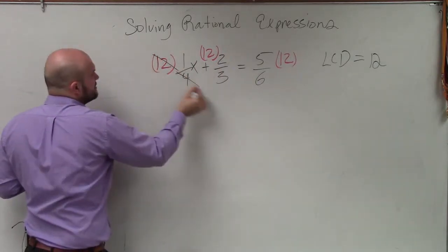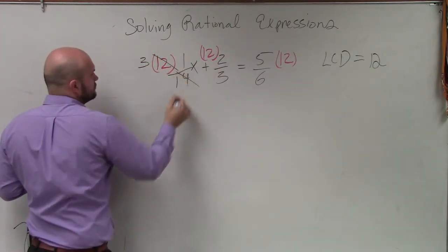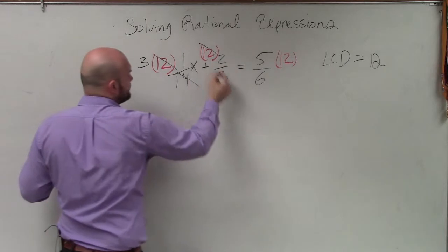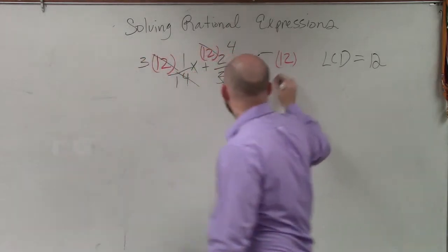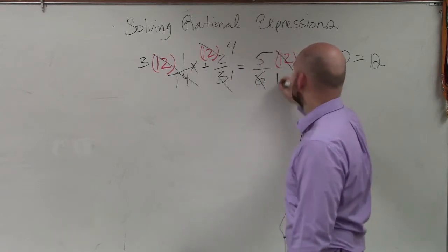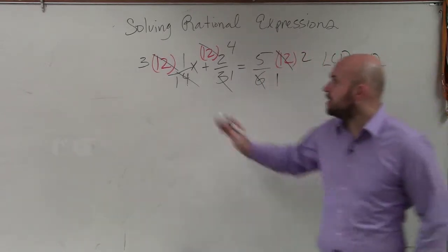So 12 over 4 simplifies to 3 over 1. 12 over 3 divides to 4 over 1. 12 over 6 divides to 2 over 1. So now when we go ahead and solve,